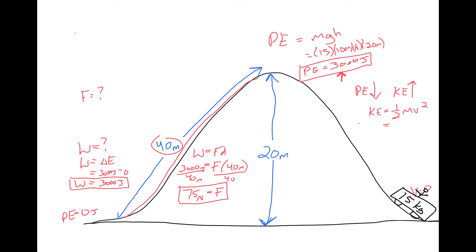So 3,000 joules of kinetic energy, one-half times the mass, which is 15 kilograms, times some velocity squared. We want to solve for that velocity.